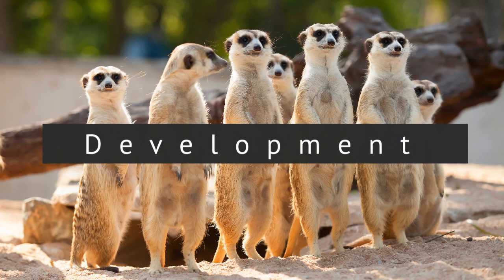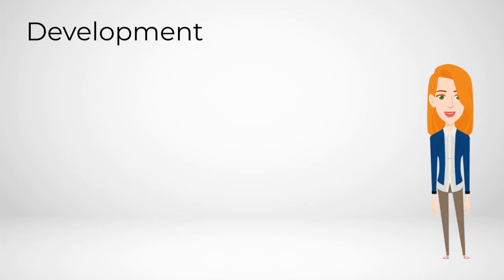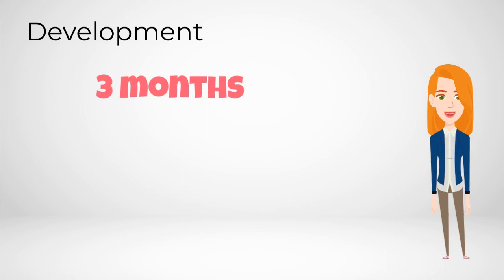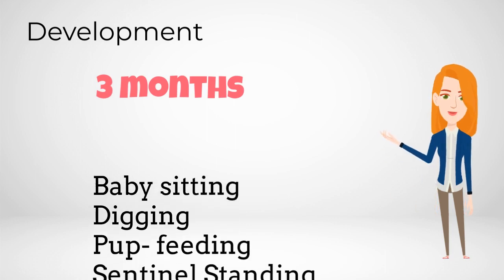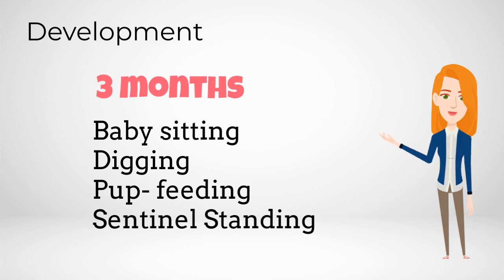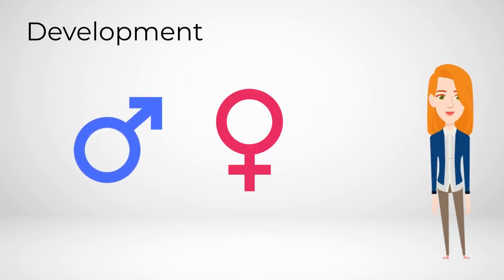The last of Tinbergen's four questions describes how a behaviour develops over an individual's lifetime. When a meerkat reaches three months of age, it begins to show cooperative behaviours like babysitting, digging, pup feeding and sentinel standing. Sentinel behaviour has been shown to be more frequent when foraging is less intense or when there is a greater threat of predation. Males tend to act as sentinels more often than females and older individuals act as sentinels more often than juveniles.